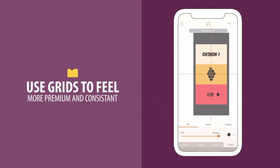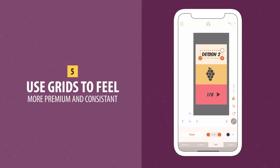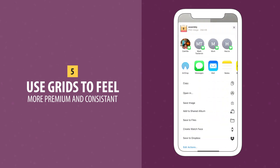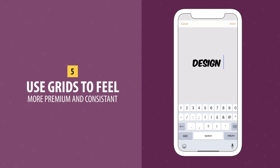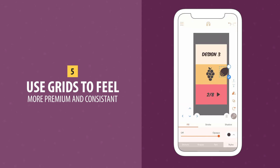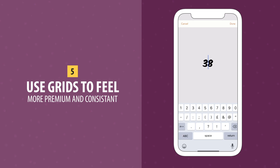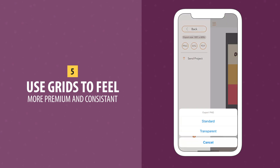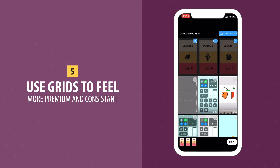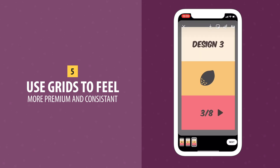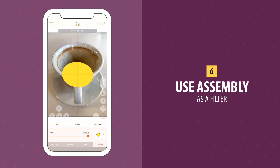Number 5. Use Assembly to build yourself a set of grid templates. Separate the text and the imagery in inventive but consistent ways to make your compositions feel more considered.